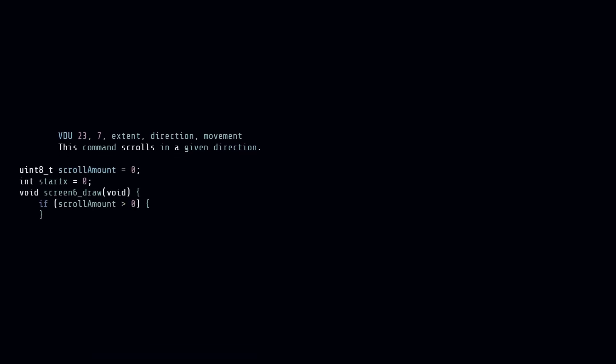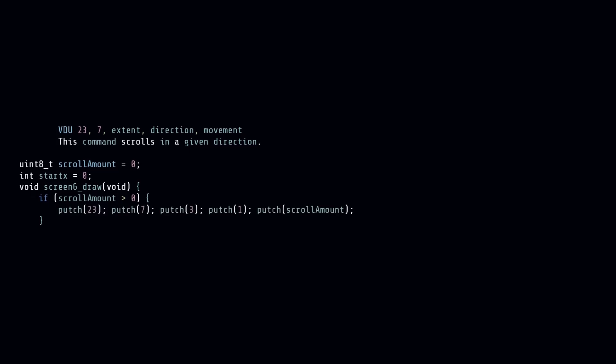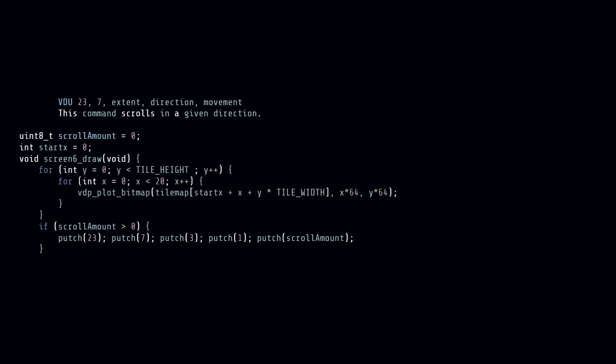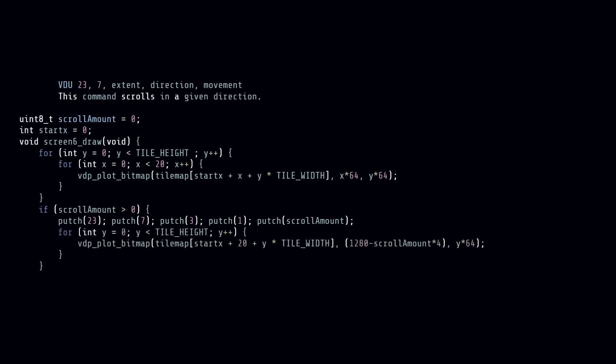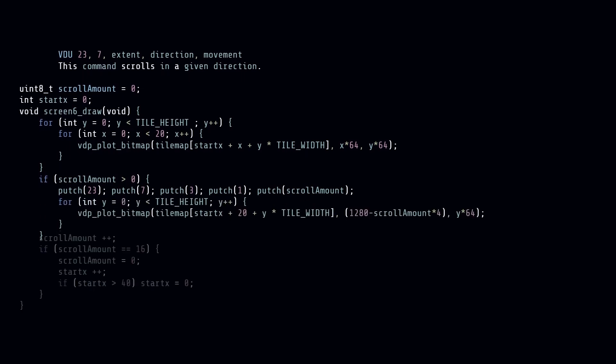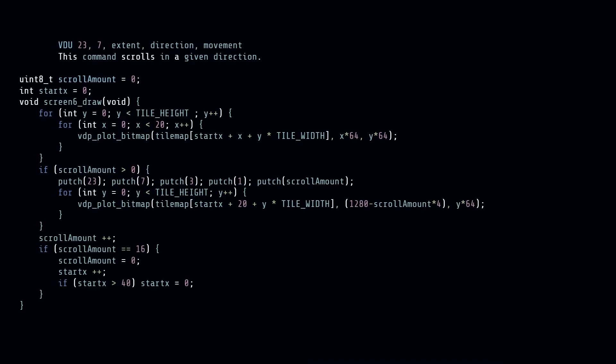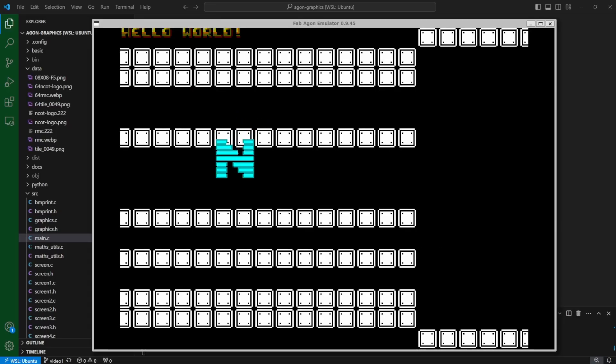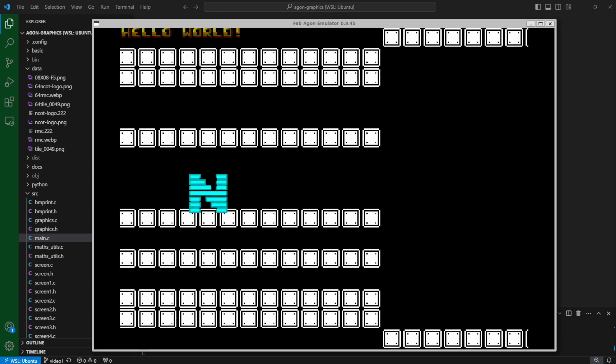Doing this on the Agon makes use of its built-in ability to scroll the screen using a VDU command. If we send this sequence to the VDP, it will move the screen sideways by however many pixels. Before that, I put in our double nested for loop, slightly modified to take into account screen dimensions. Then afterwards, add code to draw the missing strip of tiles. And it works! But it's not exactly speedy, is it?